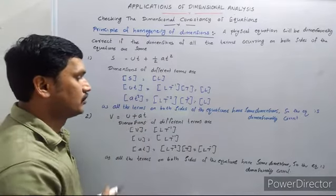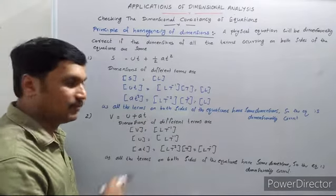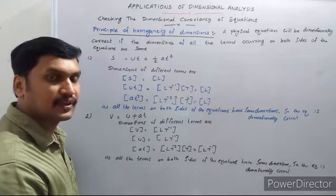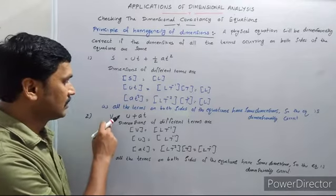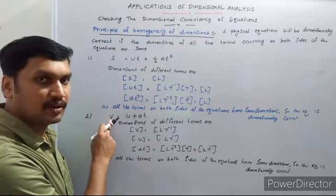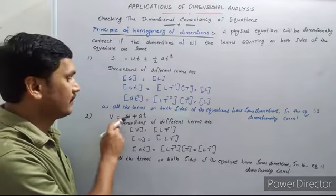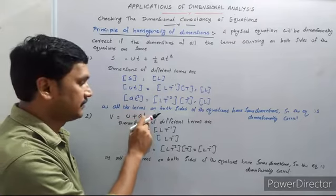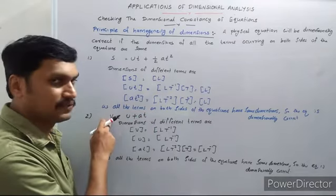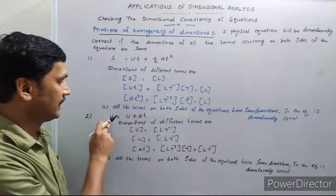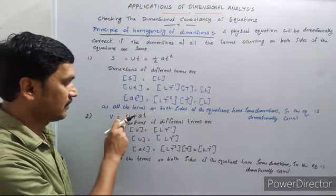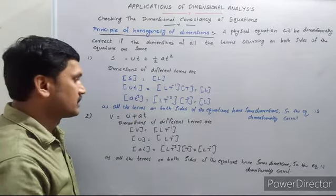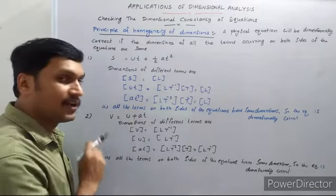Now see another example: v = u + at. This is the first equation of motion. V is the final velocity of an object moving with initial velocity u and acceleration a. After a time t, the velocity becomes v. Let us now check the dimensions of all the terms in this equation.